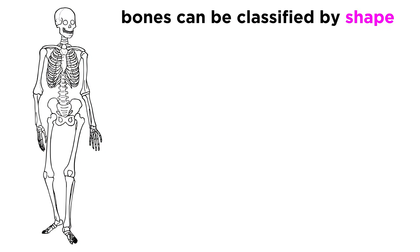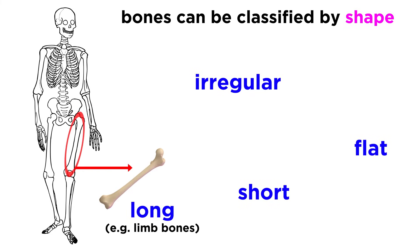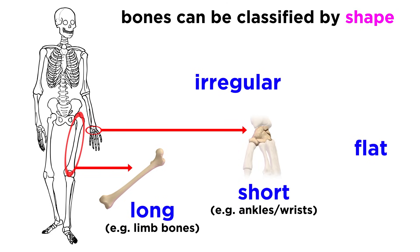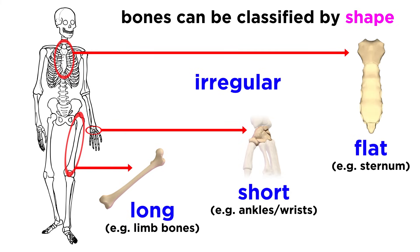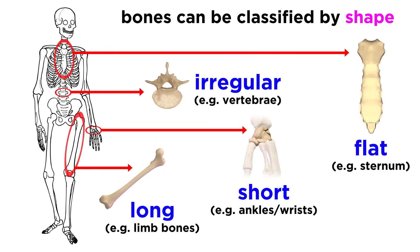Bones can also be classified by shape, being either long, short, flat, or irregular. Long bones are longer than they are wide, like the ones in our limbs. Short bones are cube-like, found in the ankles and wrists, among other places. Flat bones are thin and often curved, like the sternum and shoulder blades. And irregular bones are the ones that have complicated shapes that don't fit into the other three categories, like vertebrae and hip bones.